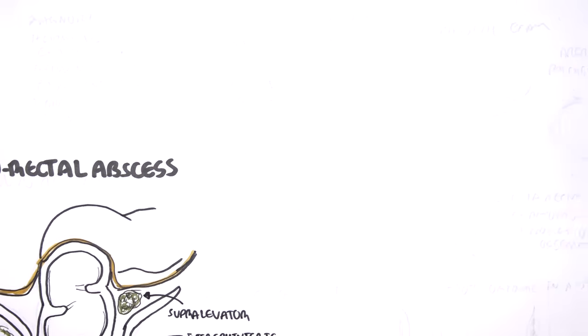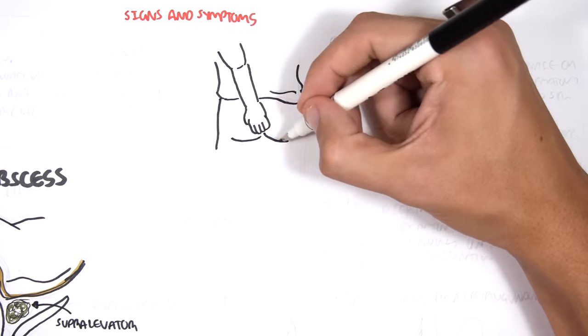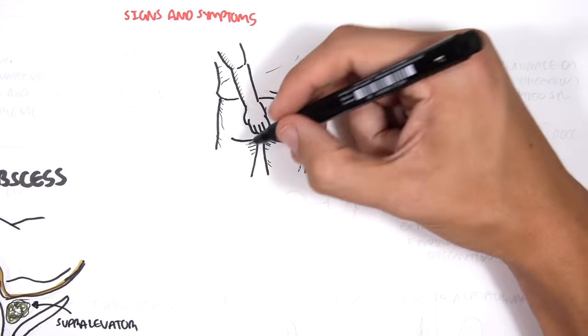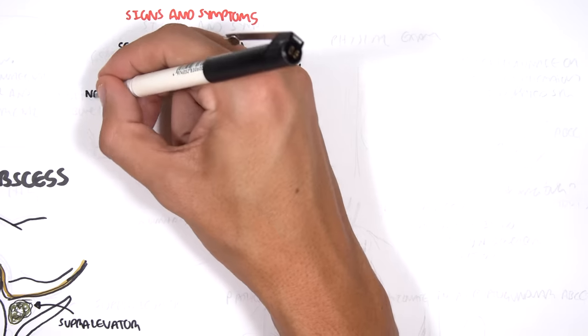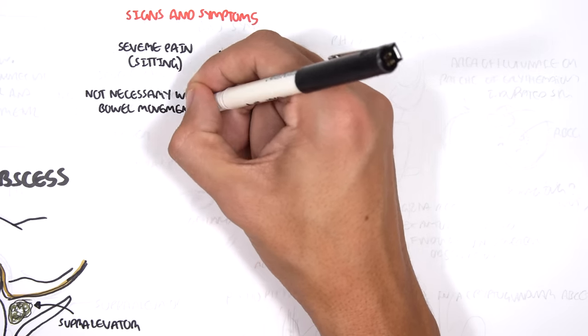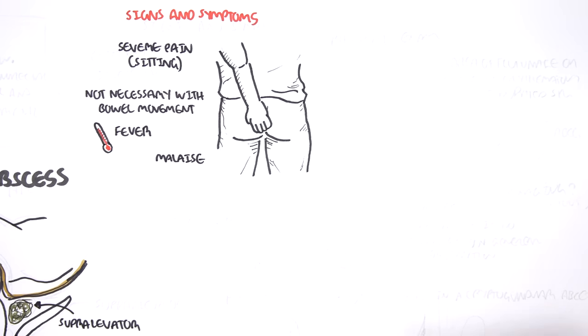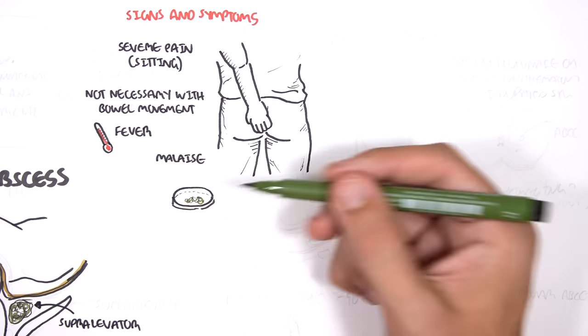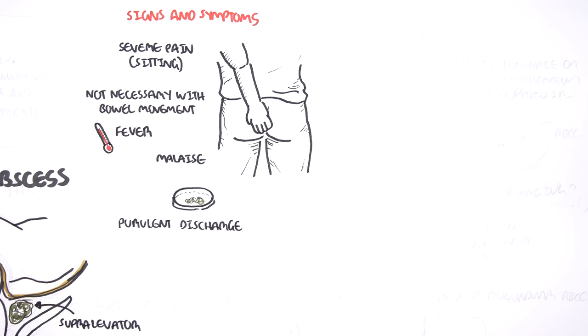The formation of an anorectal abscess can cause some signs and symptoms, including severe pain, especially when sitting. The pain doesn't necessarily have to go with bowel movements. There can be pain just whenever, and there can also be fever, because an abscess is an infection.